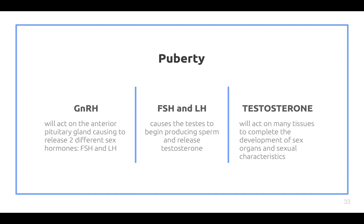Here are four key hormones involved during puberty. GnRH acts on the anterior pituitary gland, causing it to release two sex hormones: FSH and LH. FSH and LH then cause the testes to begin producing sperm and release testosterone. Testosterone then acts on many tissues to complete the development of sex organs and sexual characteristics.